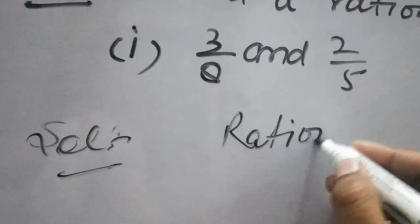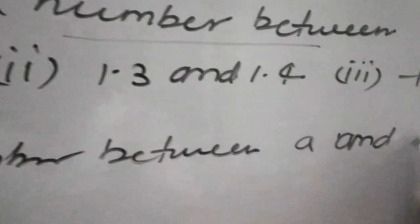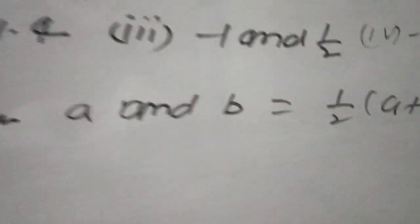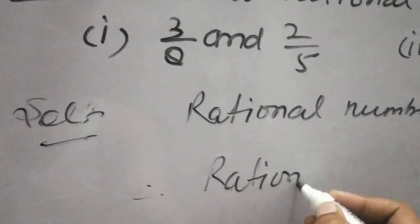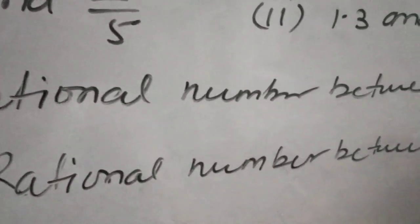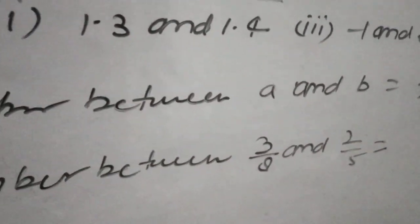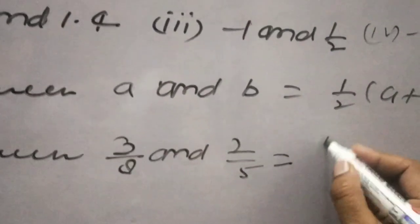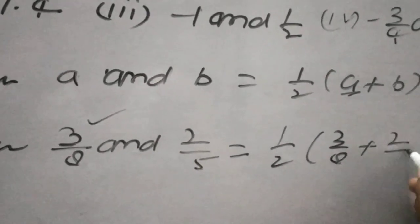The rational number between A and B equals 1 upon 2, A plus B. Here we find the rational number between 3 upon 8 and 2 upon 5. This equals 1 upon 2, replace A with 3 upon 8, plus 2 upon 5.